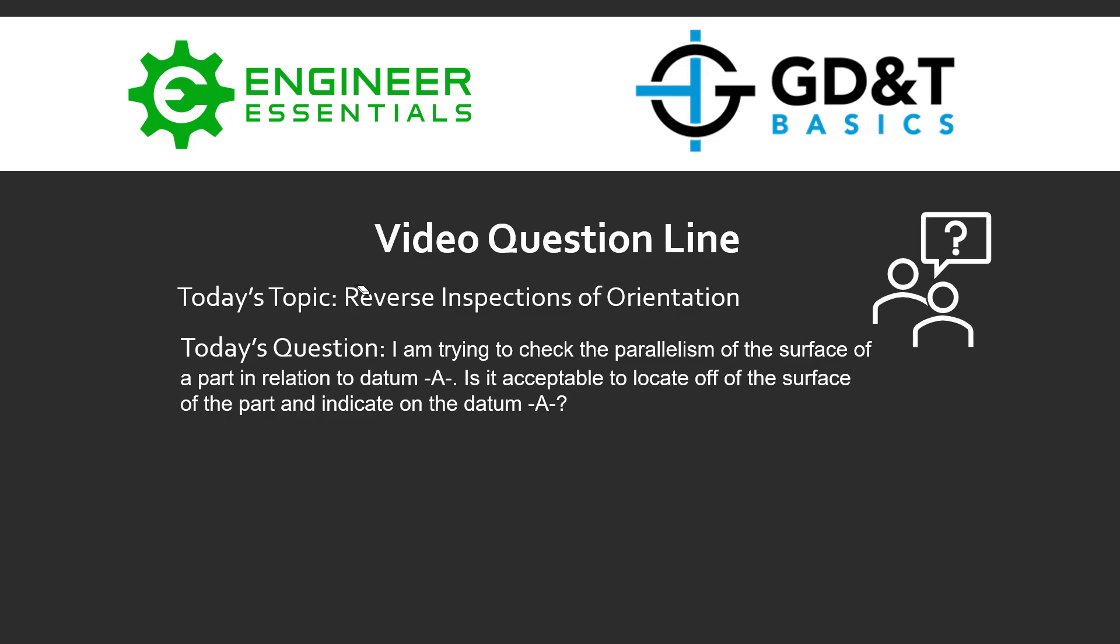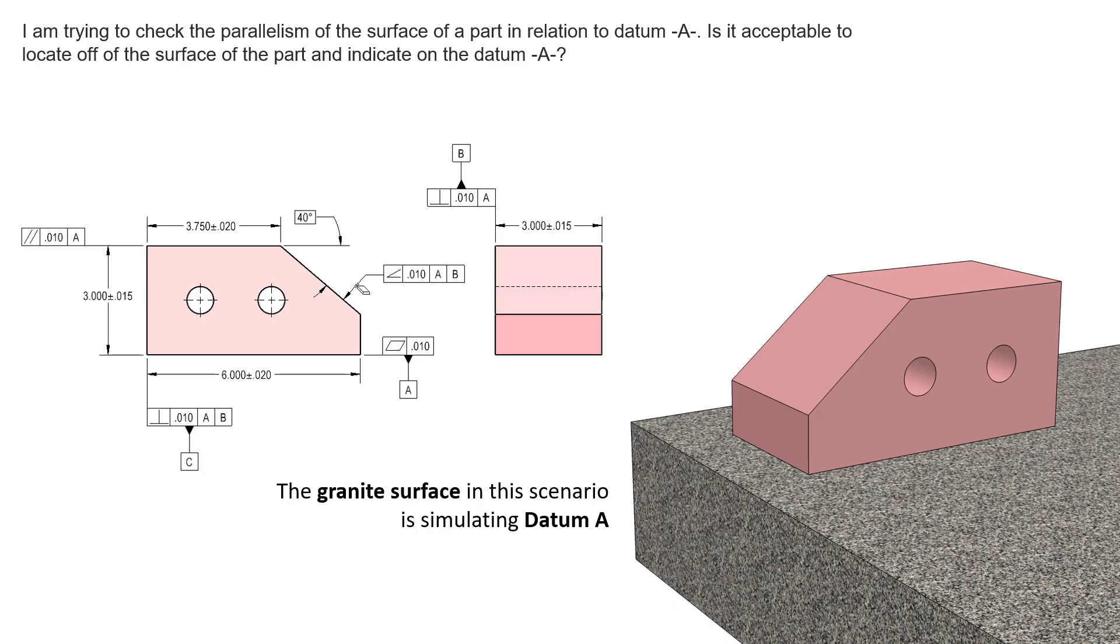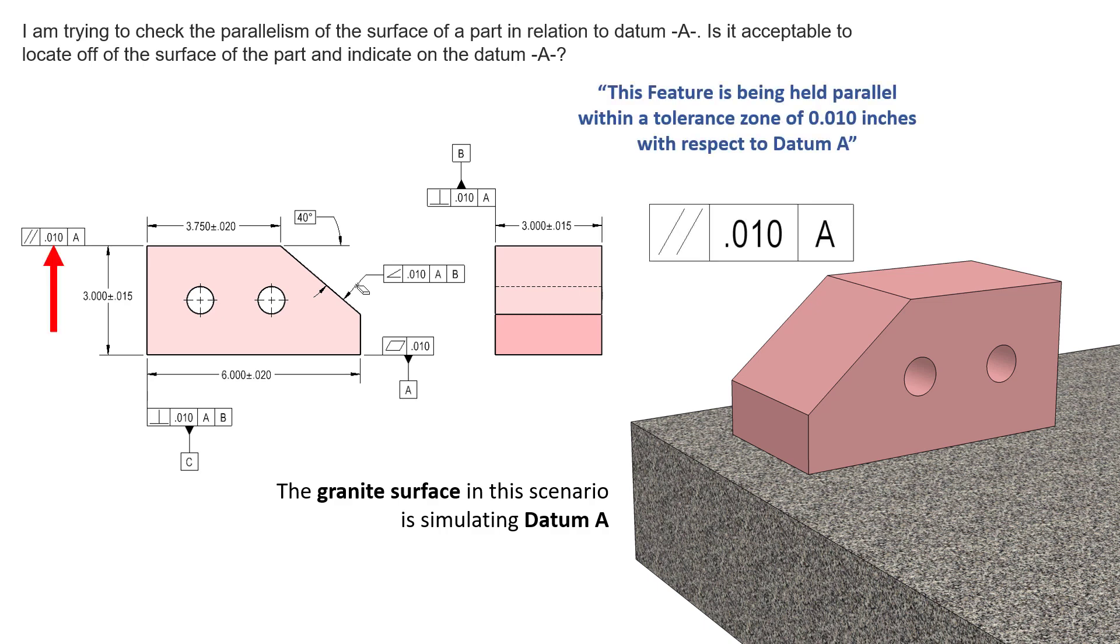So let's take a look at what this question is asking. A traditional parallelism inspection might look something like this for this feature right here. We're controlling this top surface to a tolerance zone of two parallel planes spaced apart ten thousandths of an inch. So we're ensuring that this surface is between these two planes.